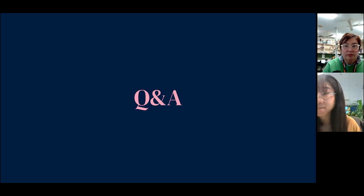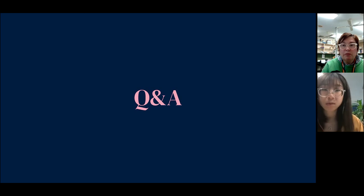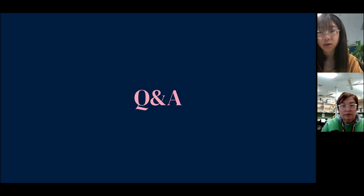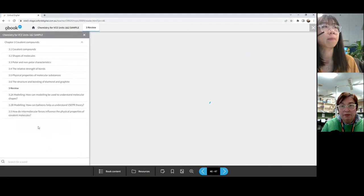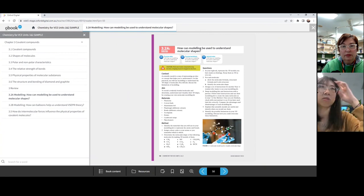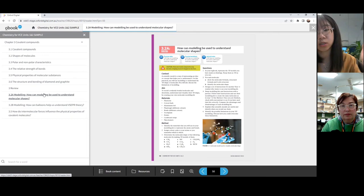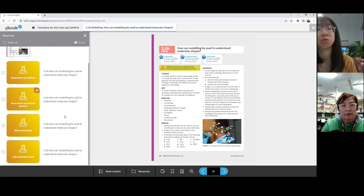Which SAC types will you be providing guidance on? We'll provide teacher guidance on all the SAC tasks, and for practical activities we have teacher and lab tech notes as well. All resources attached to experiments can be found at the back of the ePDF. In the book, they're also signposted in the chapter. At the back after all the chapters, you'll see the practicals chapter, which is where all the practicals live, including the ones that are online only. Within the resources tab you'll find everything, including editable worksheets, lab tech notes, and risk assessments.